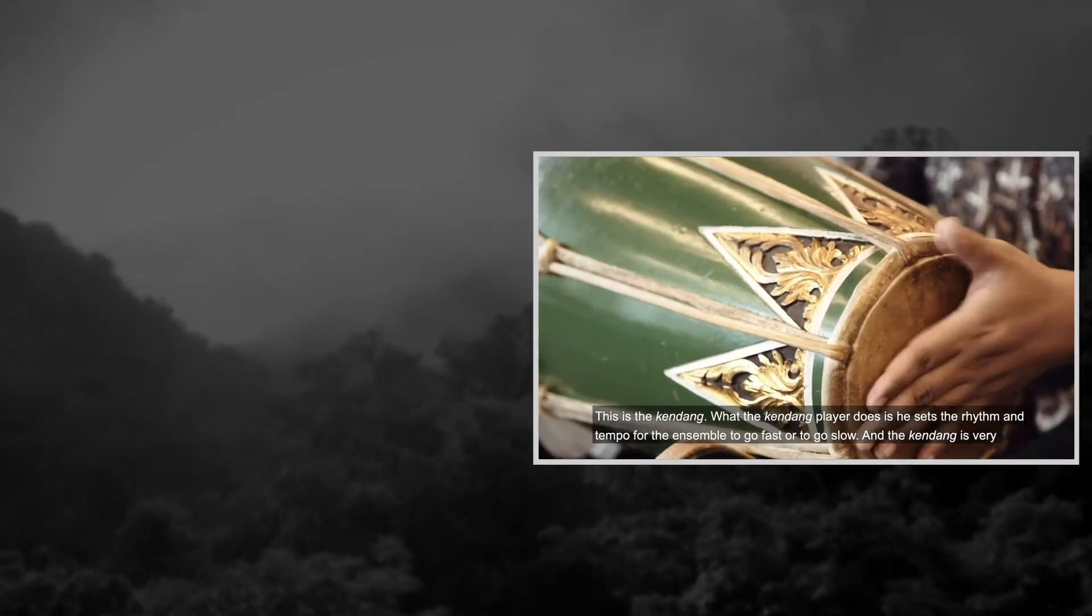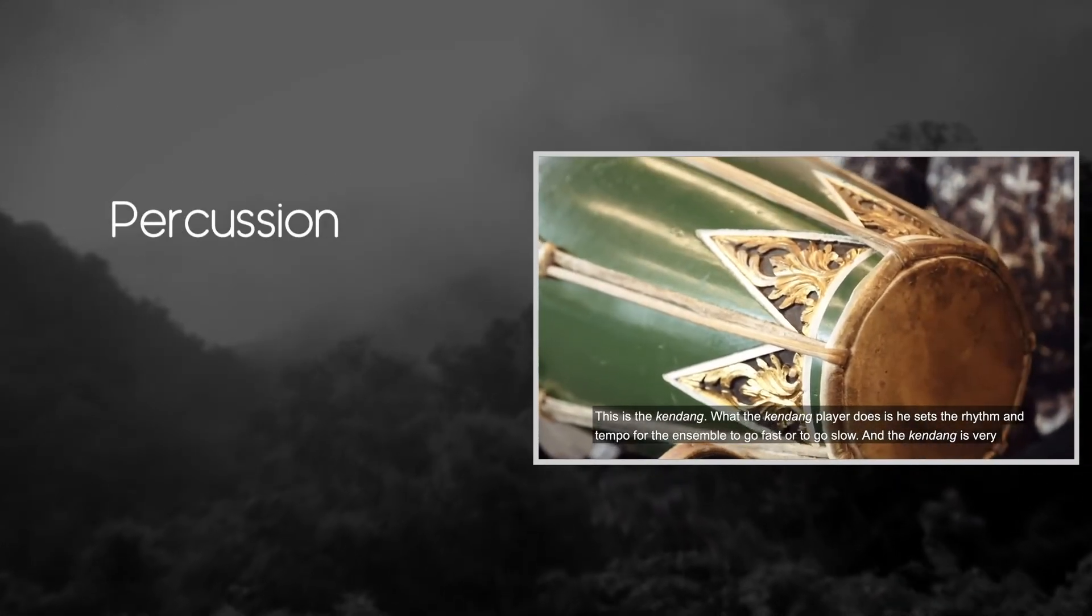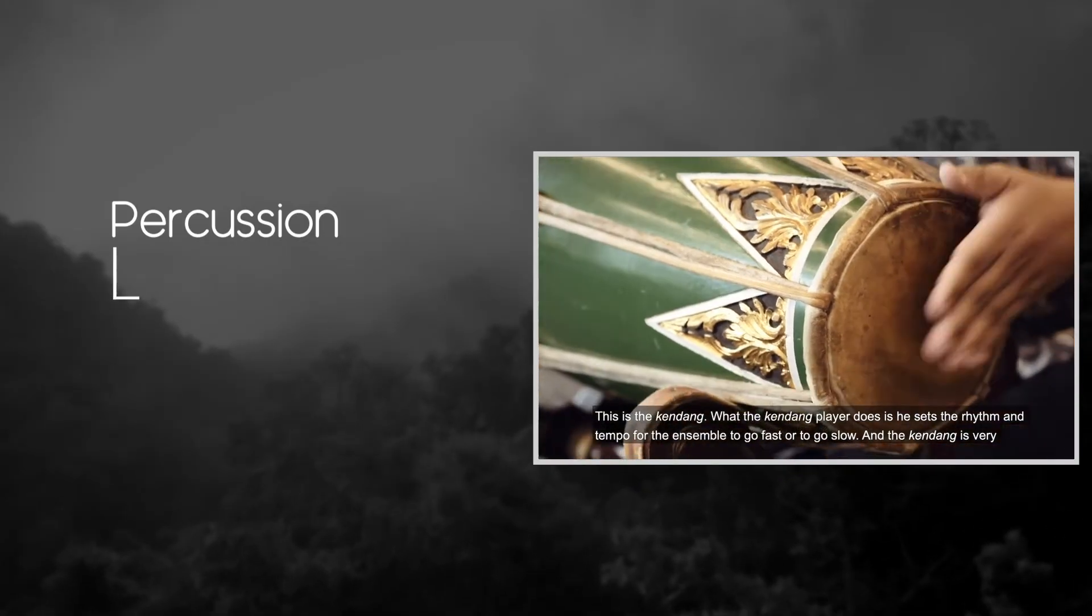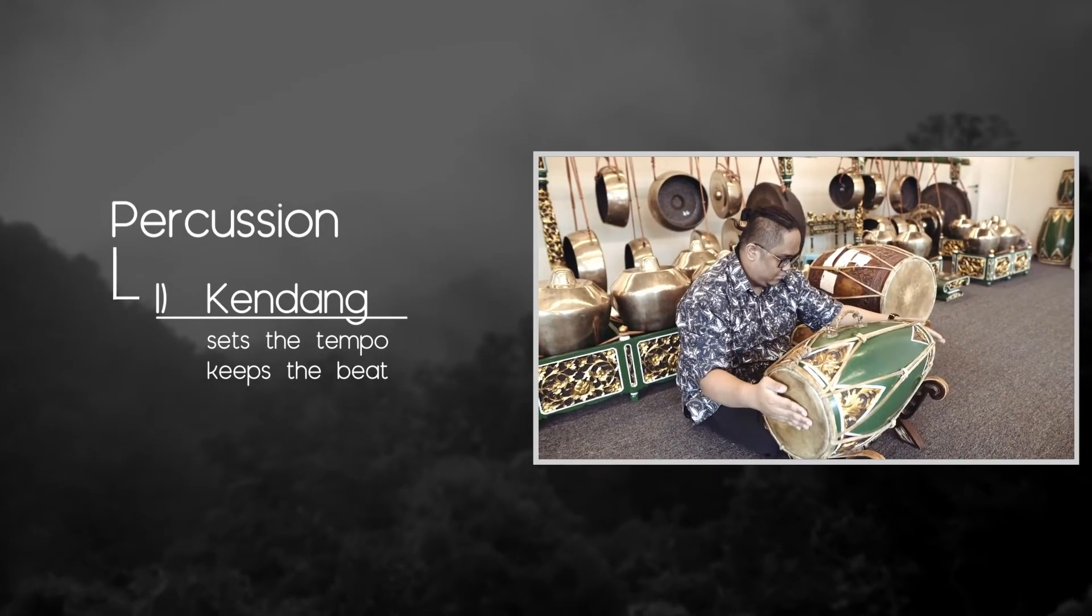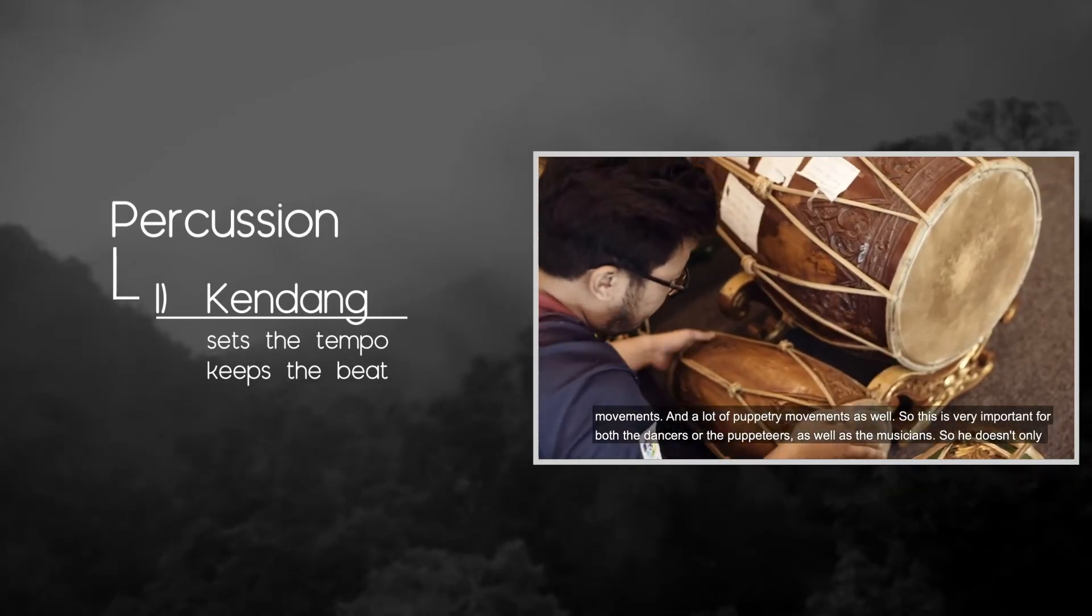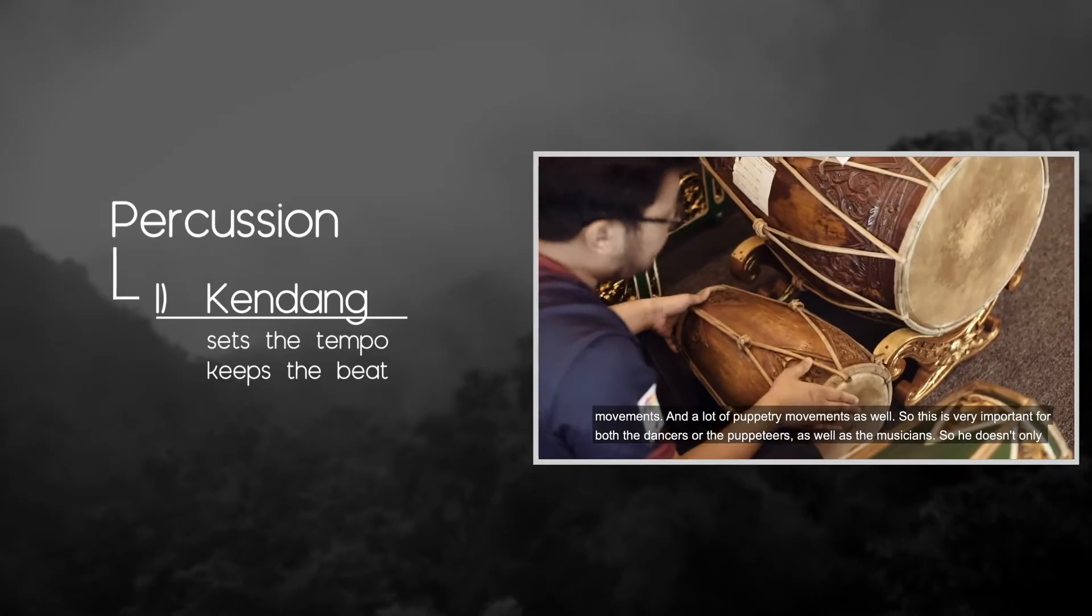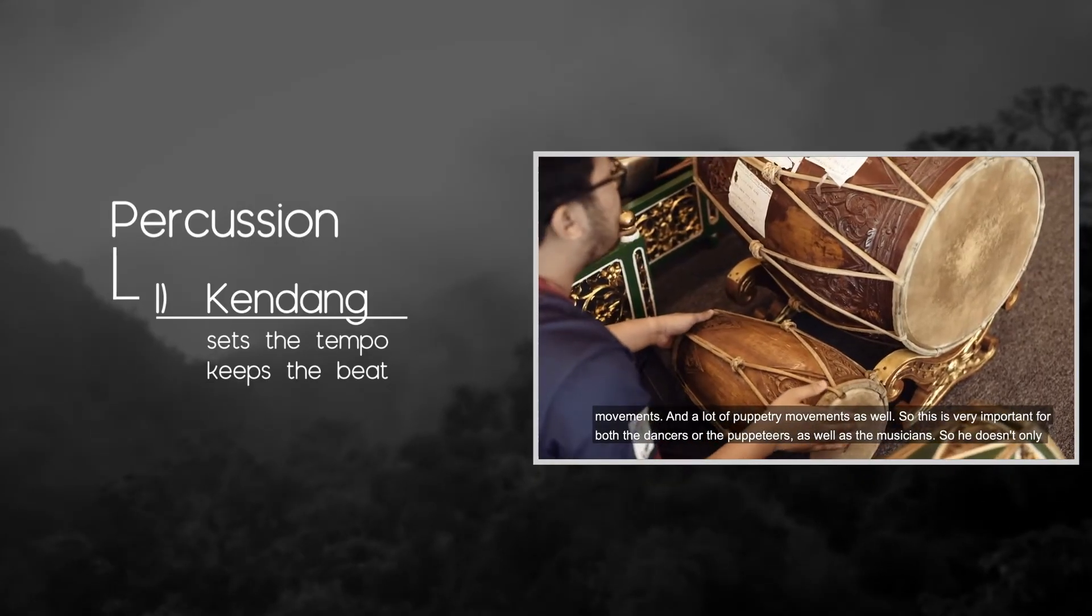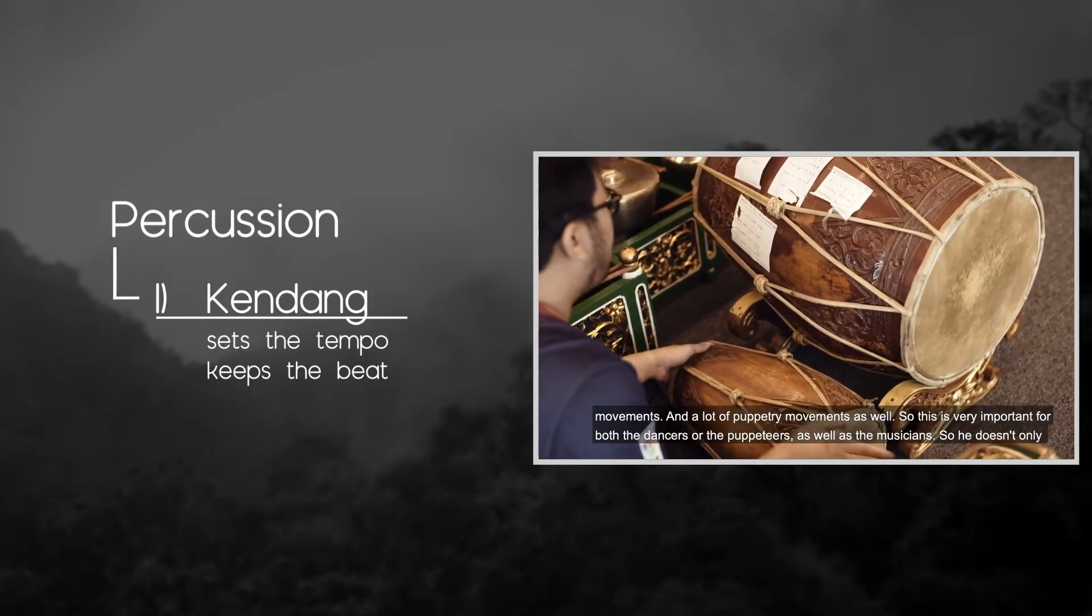Gamelan also uses percussion instruments. Typical for Javanese Gamelan is two-headed drum, Kendang. It is very important as its player sets the rhythm of the music piece. It also plays the role of the beat for dancing performance that is accompanied by Gamelan music.